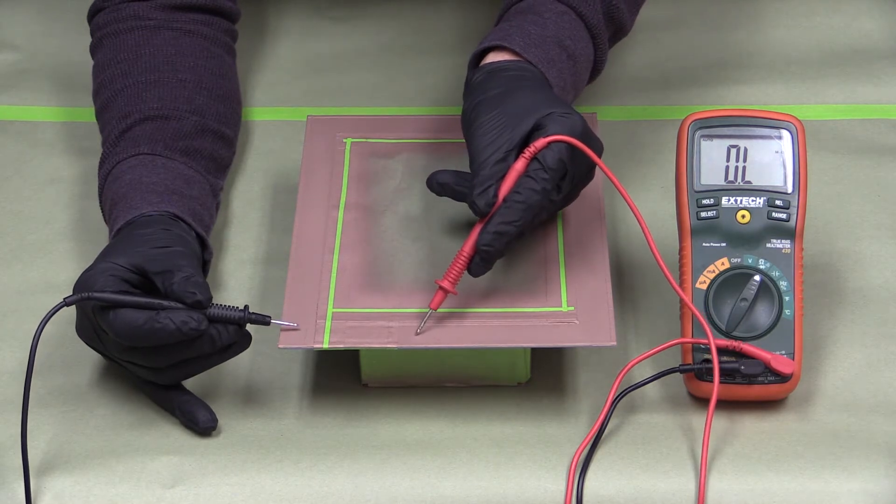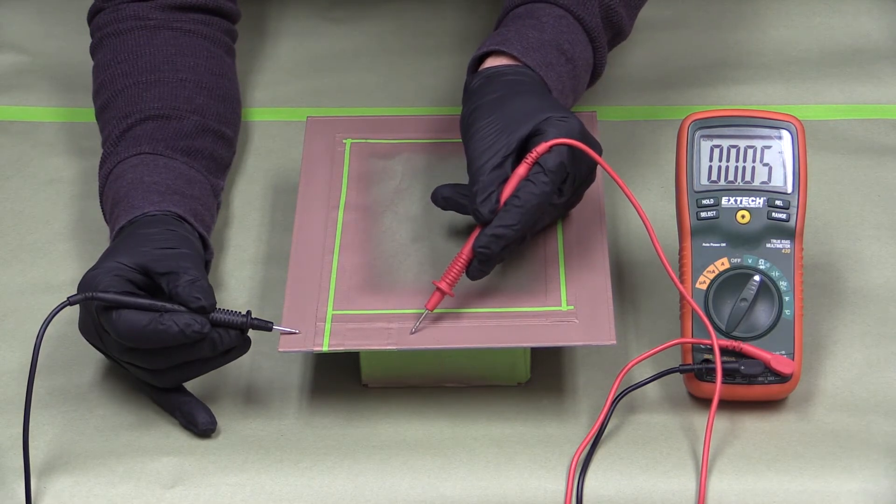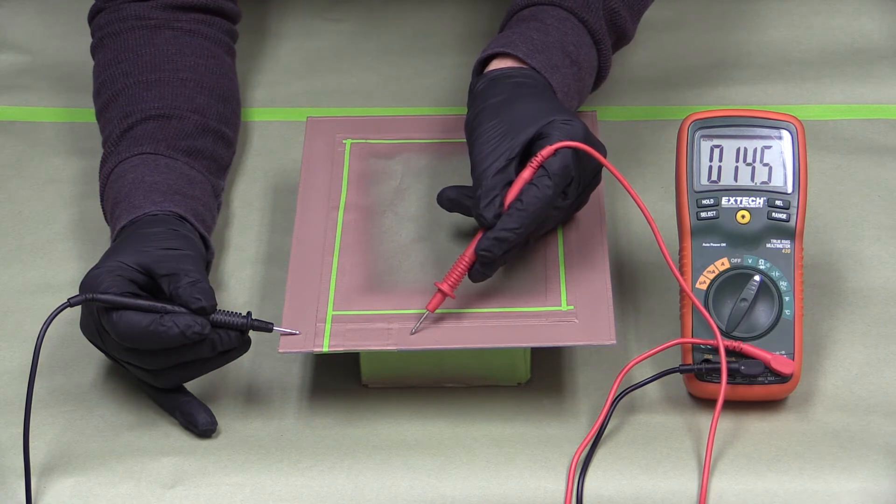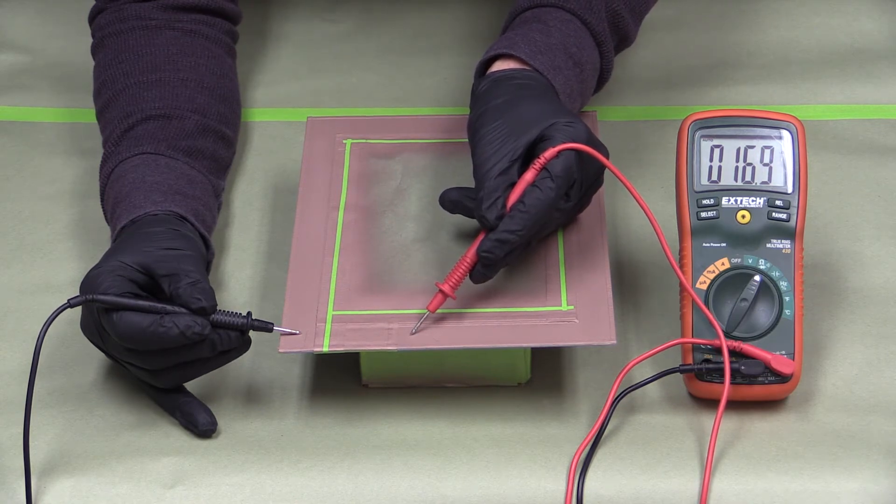Now, after you've removed that tape line, check your reading again with the multimeter. The reading will go up as the overspray is no longer included in your measurement.